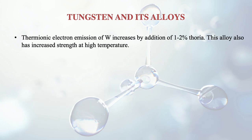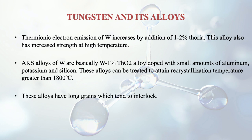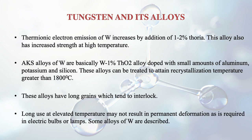Thermionic electron emission of tungsten increases by adding 1 to 2% of thoria. This alloy also has increased strength at high temperature. AKS alloys of tungsten contain tungsten, thorium oxide, and small amounts of aluminium, potassium and silicon. These alloys can be treated to attain recrystallization temperatures greater than 1800 degrees centigrade. They have long grains which tend to interlock, and long use at elevated temperature may not result in permanent deformation, as required in electric bulbs or lamps.